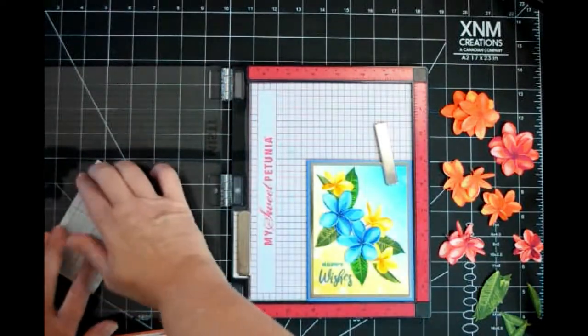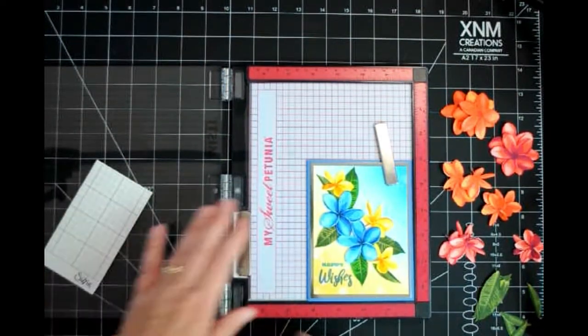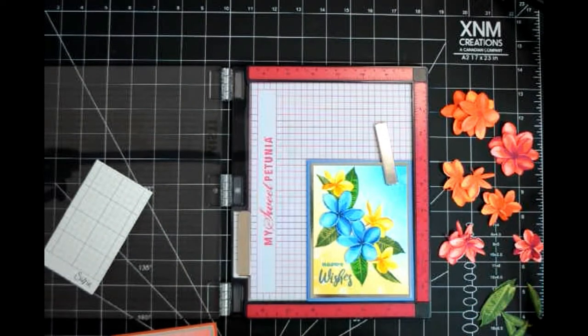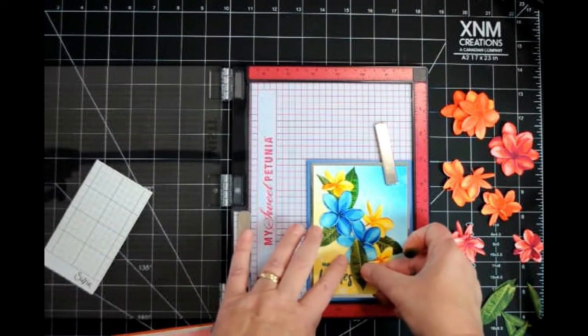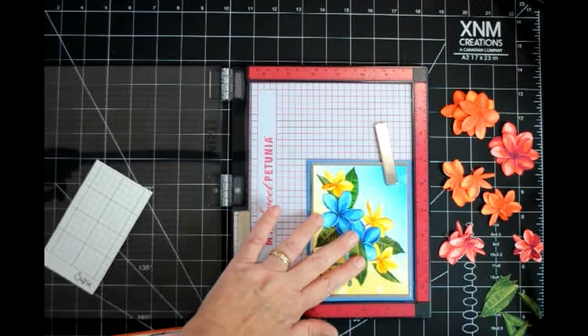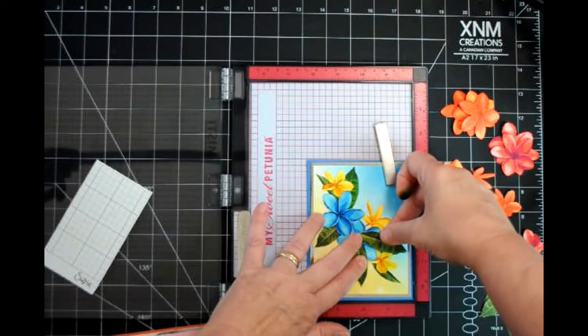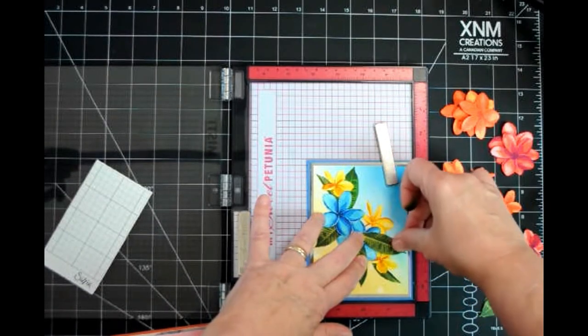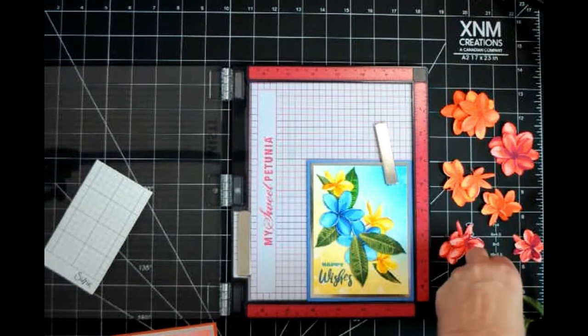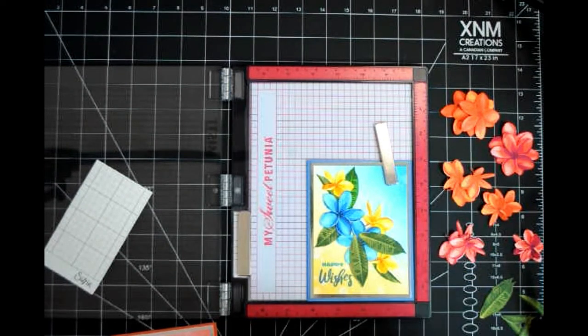Place the finished card back in the stamp platform. Identify the bottom layer of cutouts on the finished card. For this card, the leaves are on the very bottom, so I will be using them first. Carefully and without adhesive, place the matching leaves directly on top of the finished card.